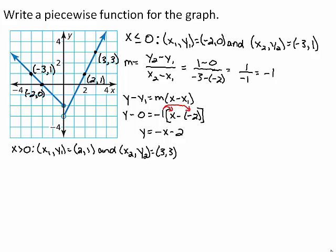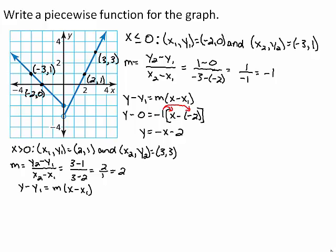Substituting these points into the slope formula, you get the quantity 3 minus 1 divided by the quantity 3 minus 2, which simplifies to 2 divided by 1, or 2. Now use the point-slope form of an equation of a line to find the equation of the graph when x is greater than 0. Substituting 2 for m, 2 for x1, and 1 for y1.